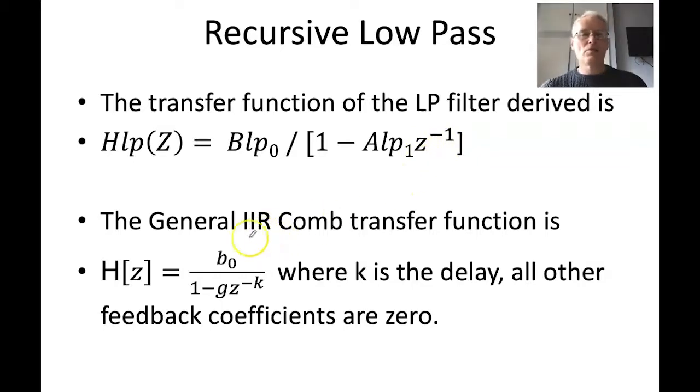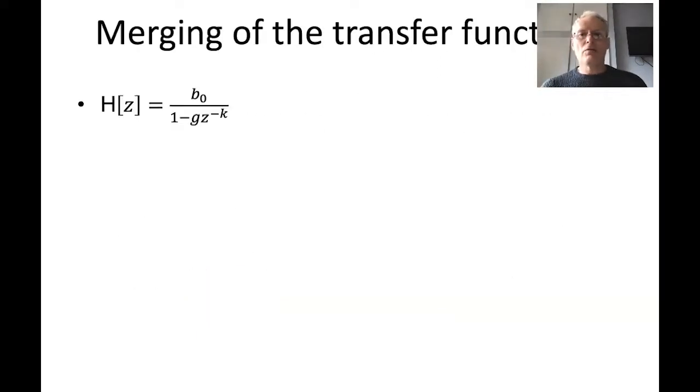Now the general IIR comb transfer function is given as follows, with this minus K being the delay term, and you'll see there's just this single feedback term. How do we combine those two? First of all, we start off with the general equation for the IIR comb, and we've got to think about this feedback term being multiplied by the low-pass filter function.